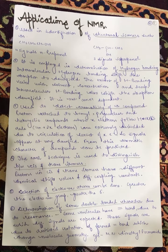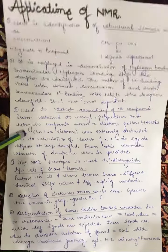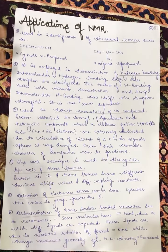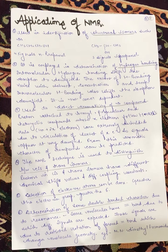Detection of electronegative compounds can be done with the help of NMR. Determination of some double bond character can also be performed — due to resonance, the number of electrons shifts from one atom to another, and we can find out compounds with double bond character by the help of nuclear magnetic resonance.